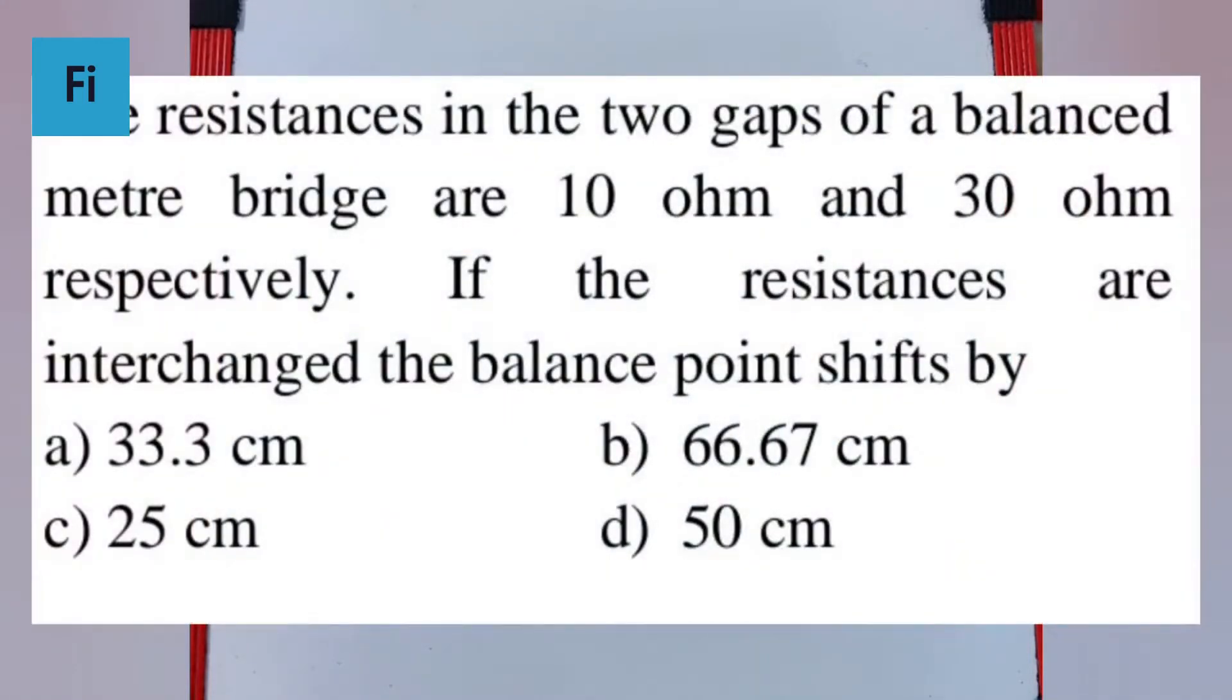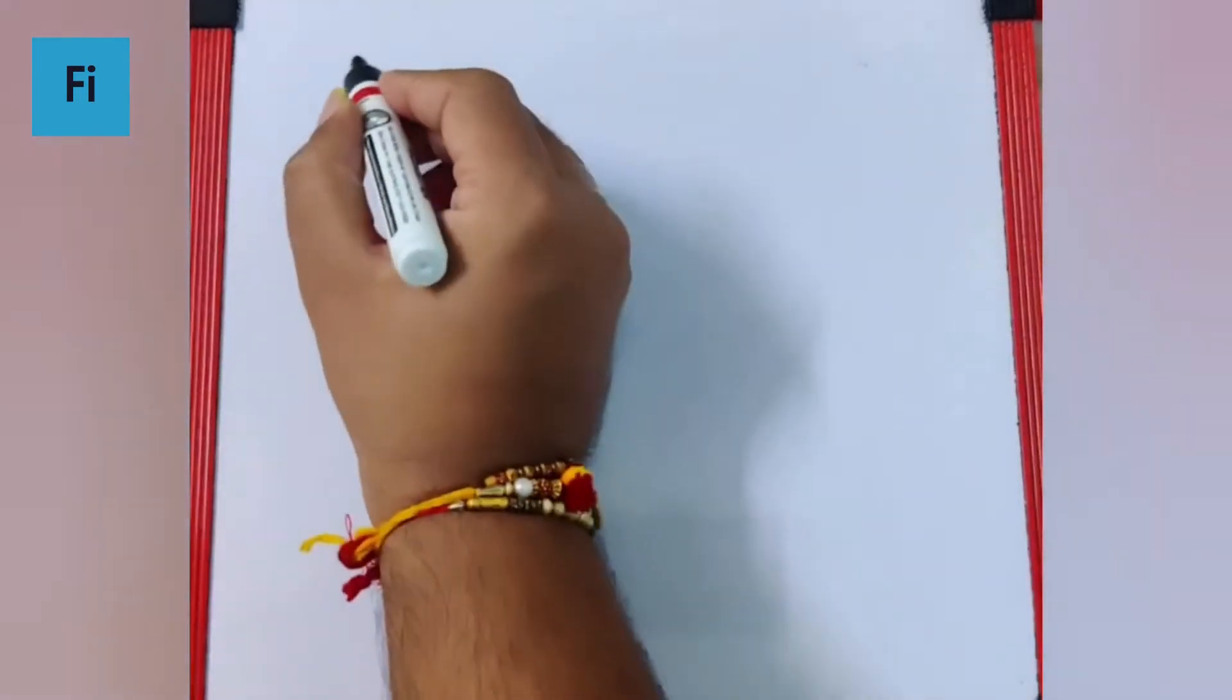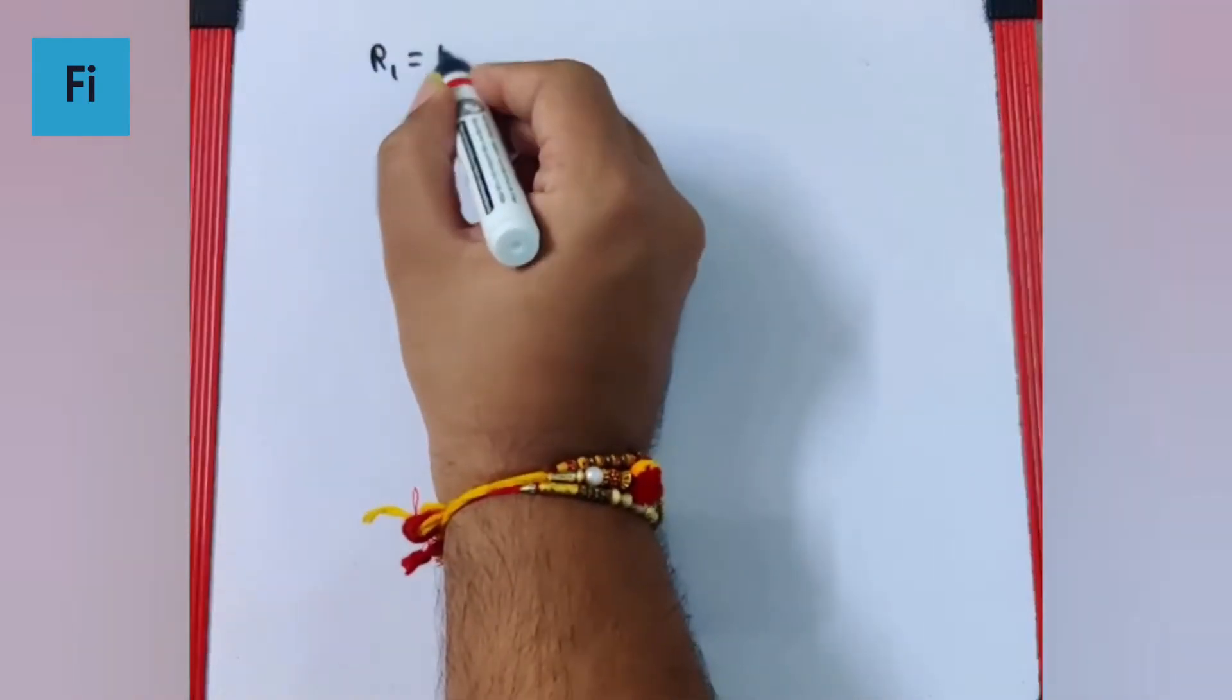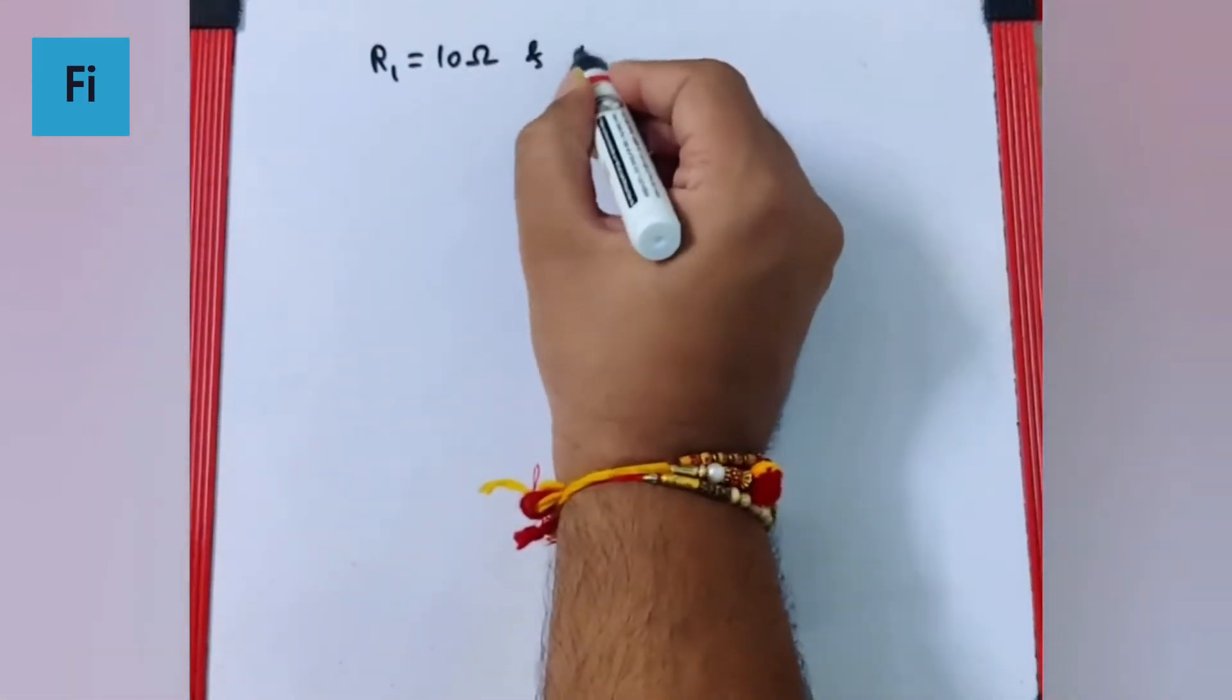The question says the resistance in the two gaps of a balanced meter bridge are 10 and 30 ohm respectively. If the resistances are interchanged, the balance point shifts by. So I can say R1 is 10 ohm and R2 is 30 ohm.